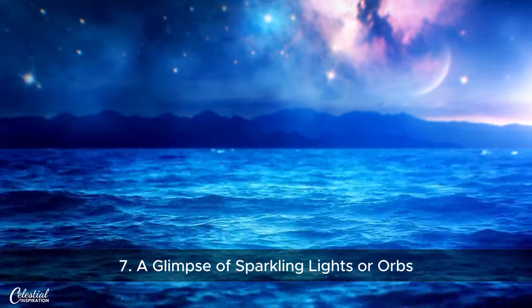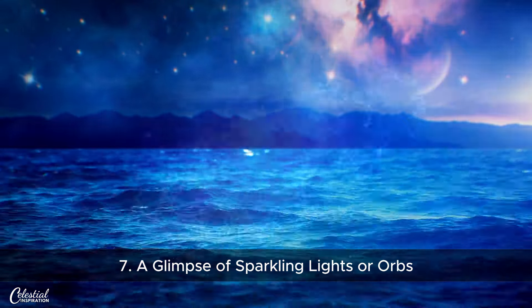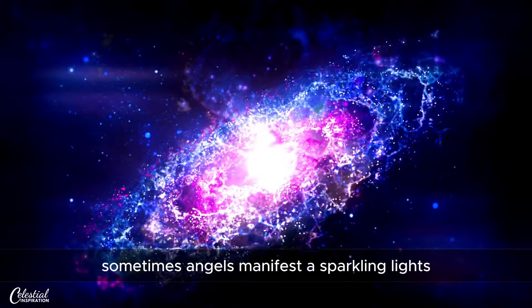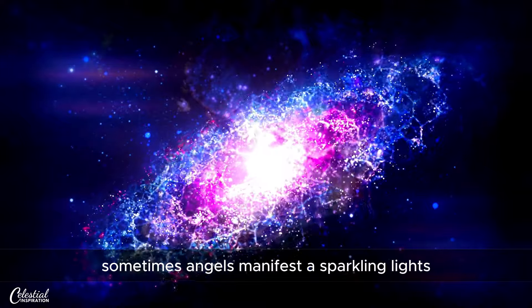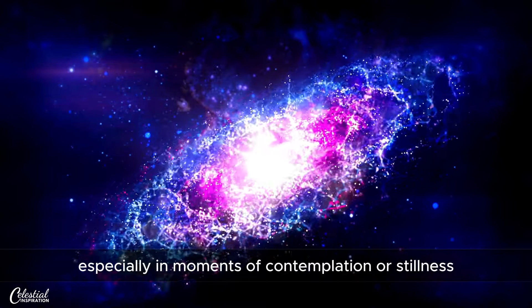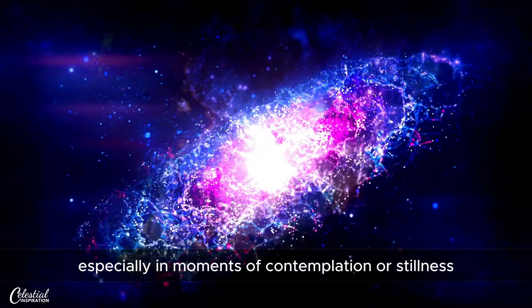Number 7: A Glimpse of Sparkling Lights or Orbs. Sometimes, angels manifest as sparkling lights or orbs that catch your attention, especially in moments of contemplation or stillness.